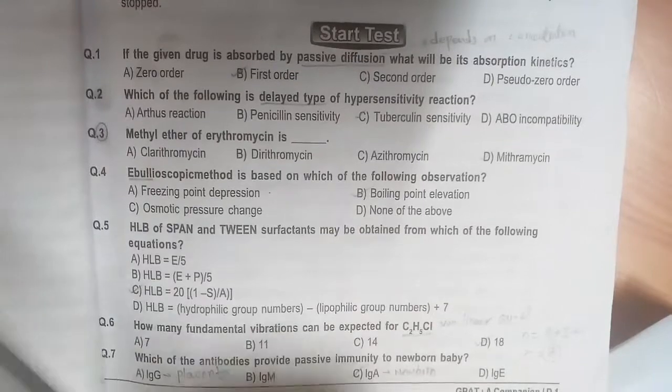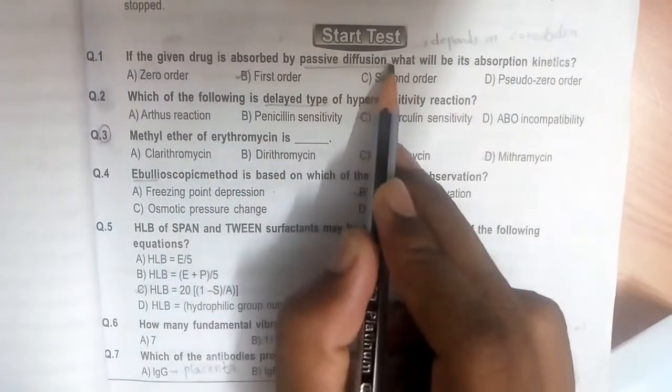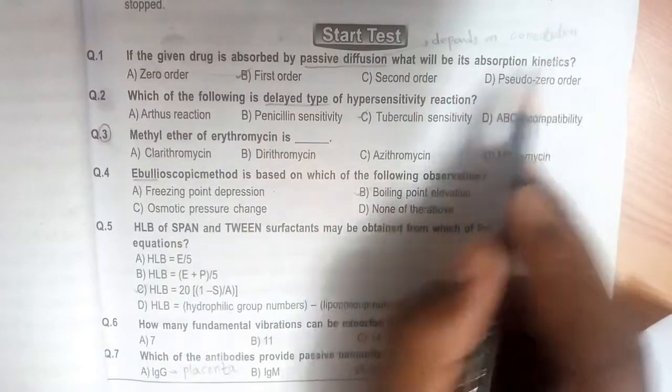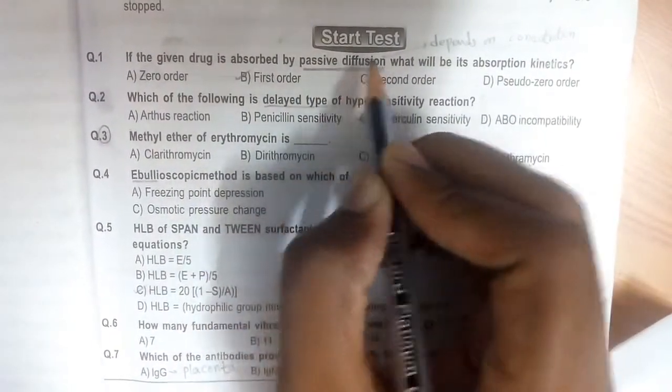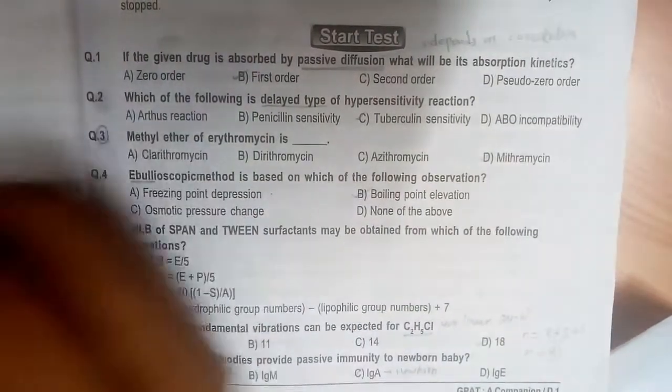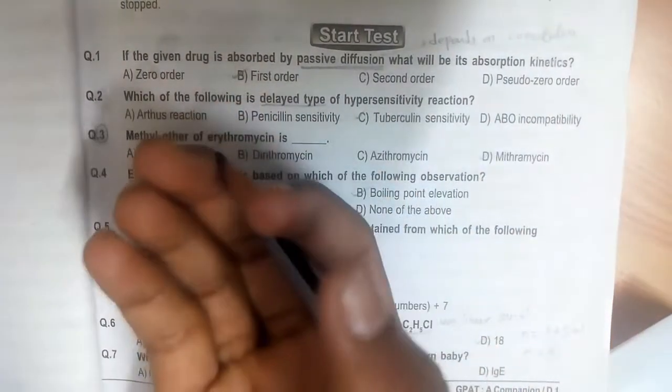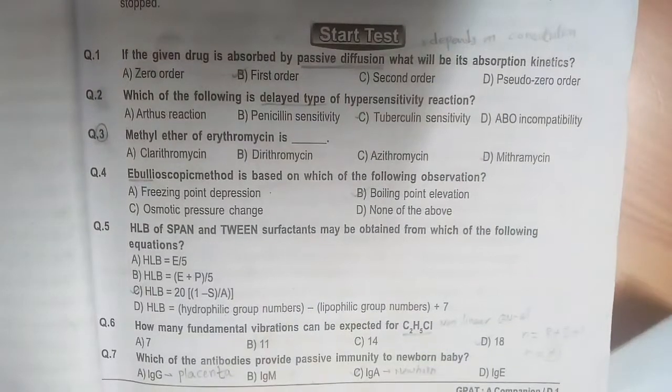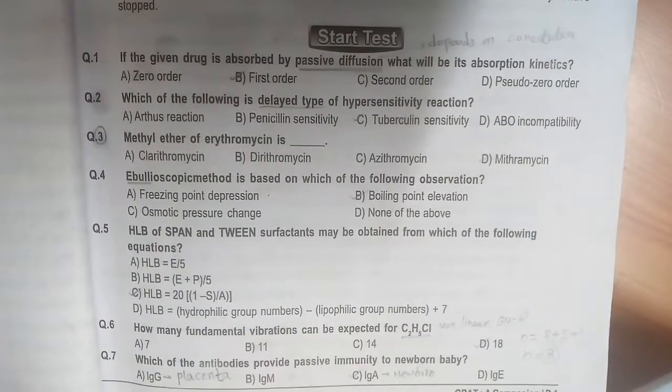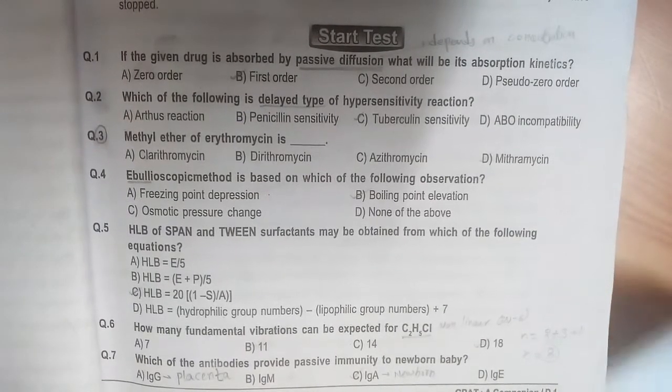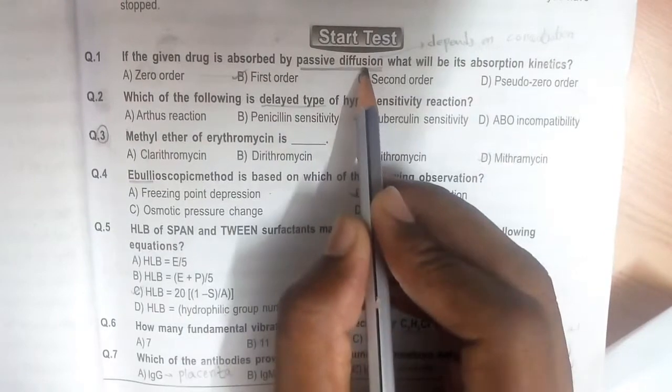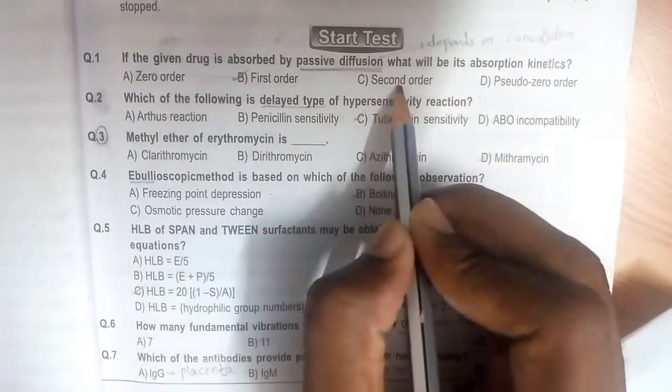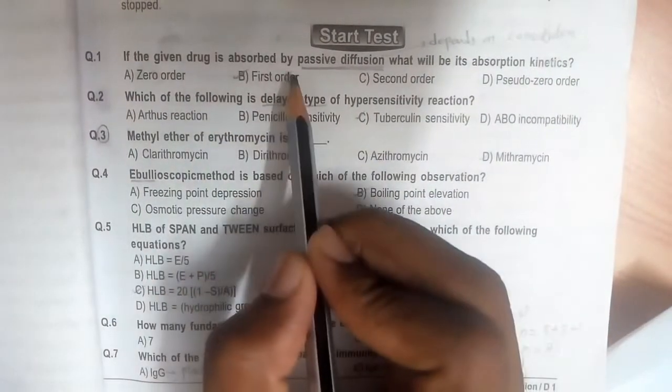First question: If the given drug is absorbed by passive diffusion, what will be its absorption kinetics? In this question, the important terminology is passive diffusion. You have to know the basics of the subject. Passive diffusion is based on concentration gradient—molecules move from high concentration to low concentration. It's a concentration-dependent phenomenon. Among zero order, first order, second order, and pseudo zero order, which one depends on concentration? The answer is first order.